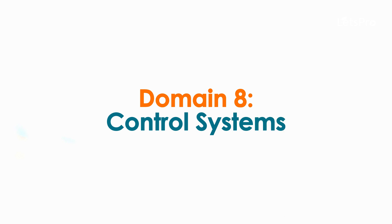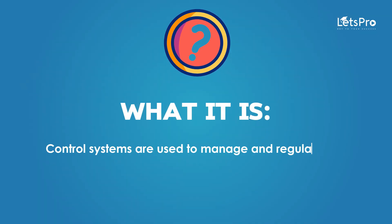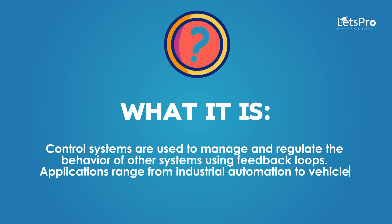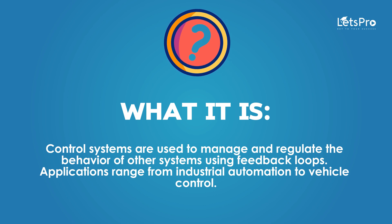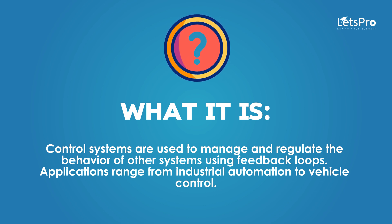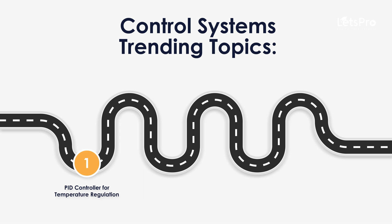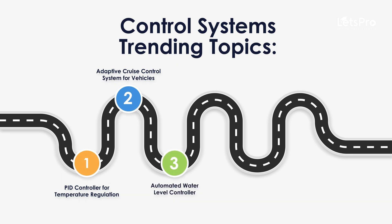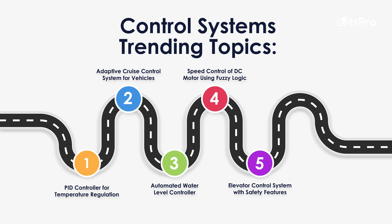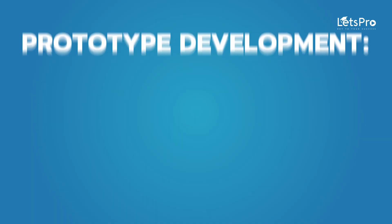Domain 8: Control Systems. Control systems are used to manage and regulate the behavior of other systems using feedback loops. Applications range from industrial automation to vehicle control. Trending Topics: PID controller for temperature regulation, Adaptive cruise control system for vehicles, Automated water level controller, Speed control of DC motor using Fuzzy logic, Elevator control system with safety features.